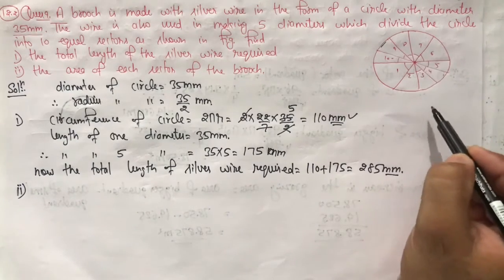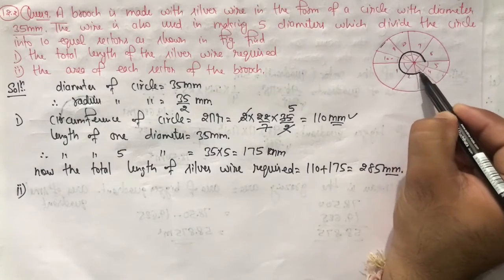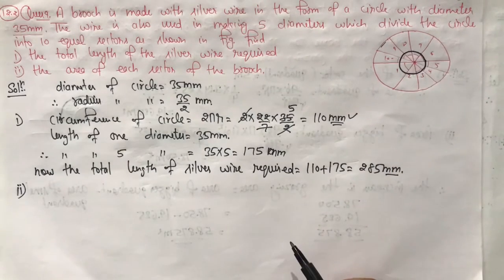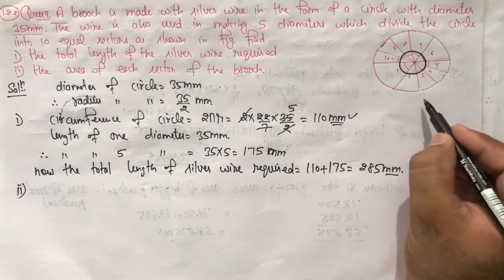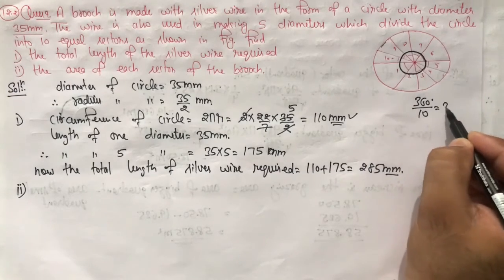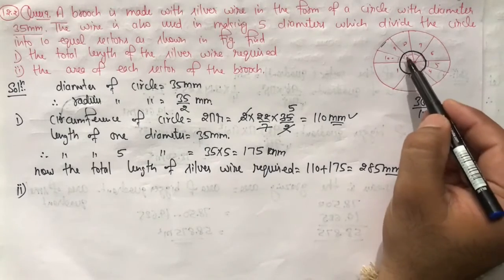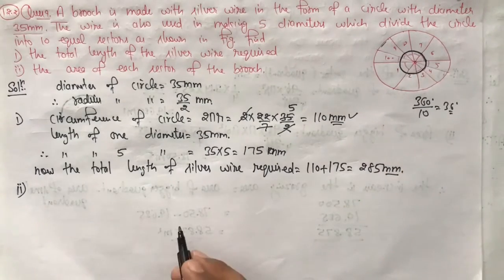If you see, the total angle here from here to here is 360 degrees. It is divided into 10 equal parts. Then what is the angle of one part? The total angle was 360, divided by 10, which is 36 degrees. So the angle of each sector is 36 degrees.